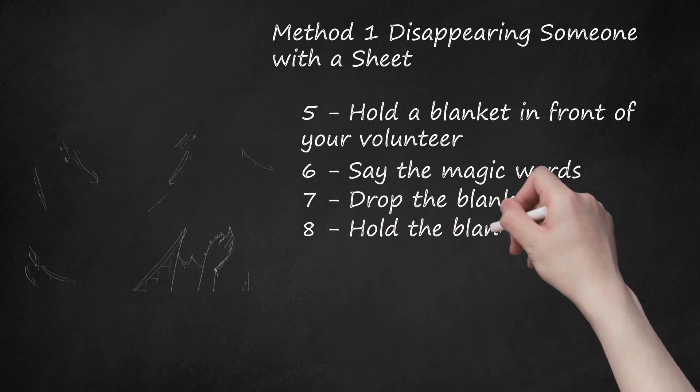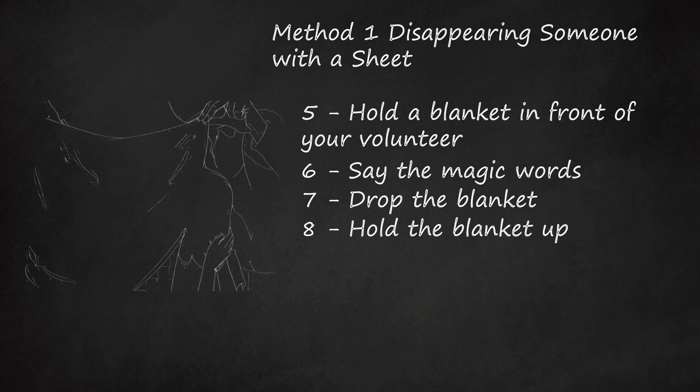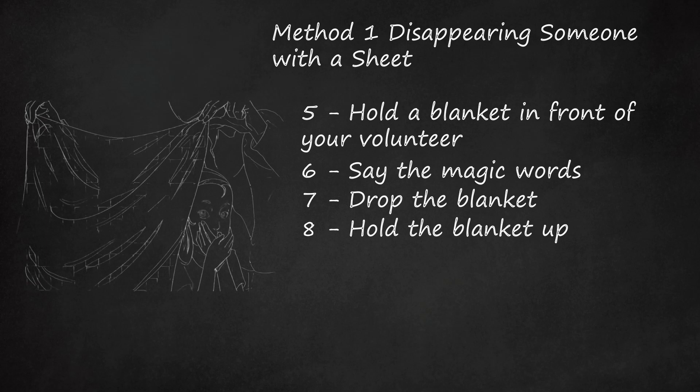Step 8 - Hold the Blanket Up. Once you've secured the blanket up a second time, say your other trigger word. This will signal for your volunteer to resume her original position. Make small talk until she is back in place. This should take about 5 seconds or less.